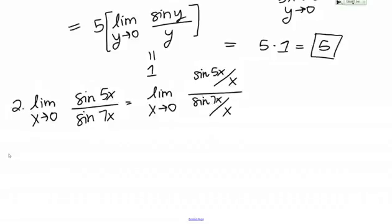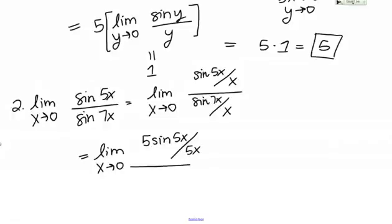Since there's a limit as X goes to 0, I don't really care what happens at 0, so it's okay to have X in the denominator. Now this looks like what we started with in number 1. In the numerator I'm going to multiply and divide by 5, making it 5 times sine of 5X over 5X. In the denominator I'll do the same thing with 7, giving 7 times sine of 7X over 7X. I haven't changed the limit by doing this.